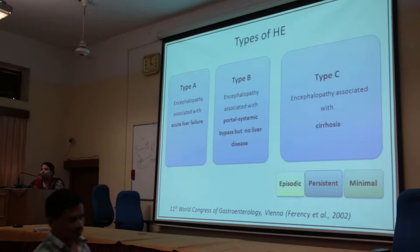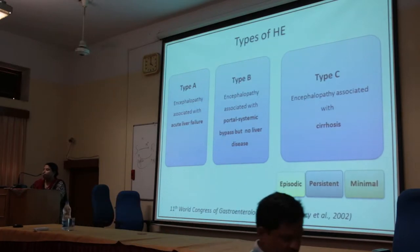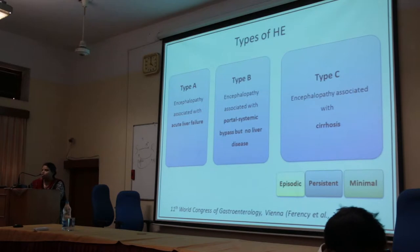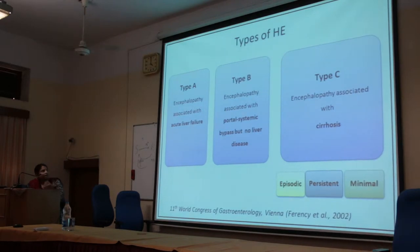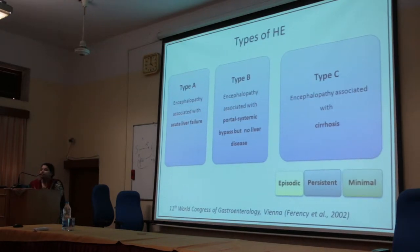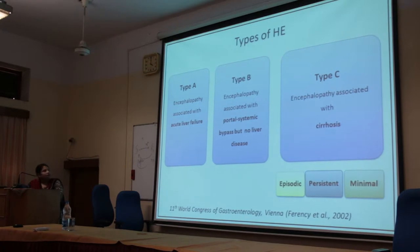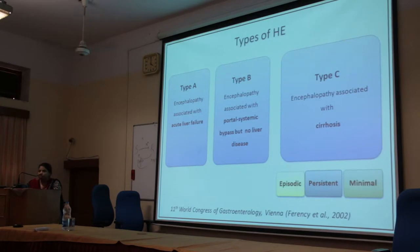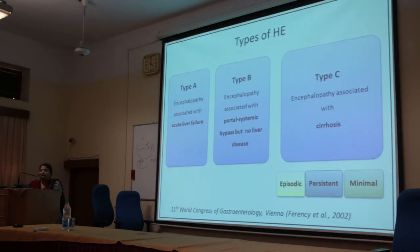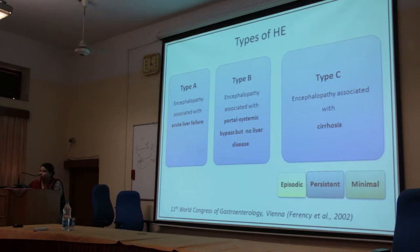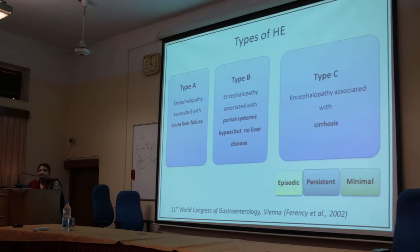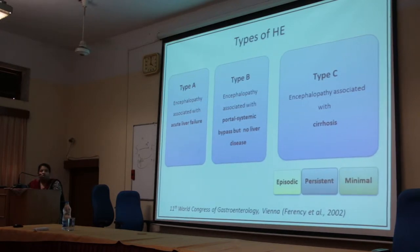There are various categories according to the extent of liver damage. If the liver is severely damaged — the acute condition — we categorize it as Type A encephalopathy. Type B is associated with a portal-systemic bypass but no evident liver disease. Type C, which is the most prominent and occurs at the highest rate, is encephalopathy associated with cirrhosis.